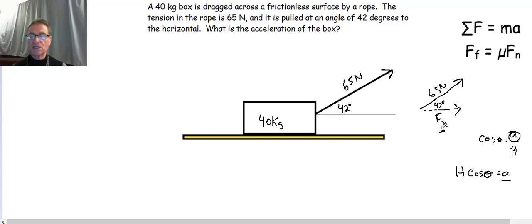Well the hypotenuse in this case is 65 Newtons, and the angle is 42 degrees, so the cosine of 42 degrees. When I plug those into my calculator what I get is 48.3 Newtons. So the x component of that 65 Newton force is 48.3 Newtons.